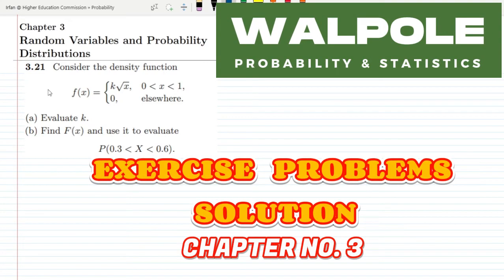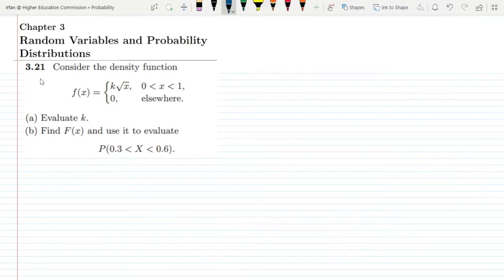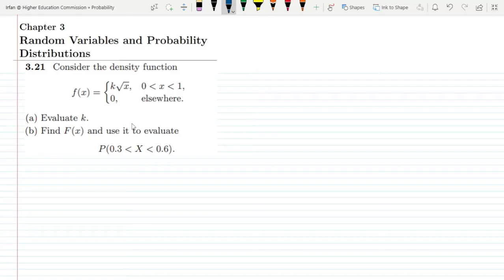Welcome back guys. This is question 3.21 of chapter 3. The statement considers the density function f(x) = k√x in the range 0 to 1, and 0 elsewhere.